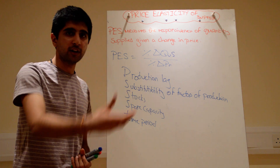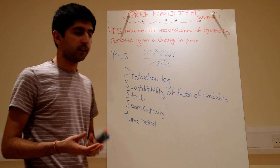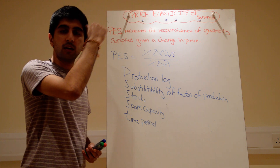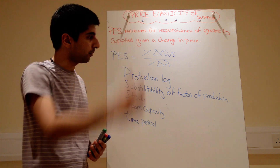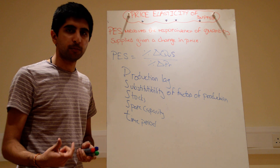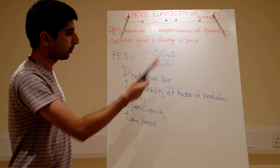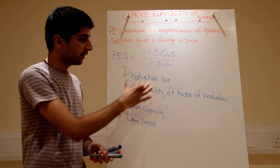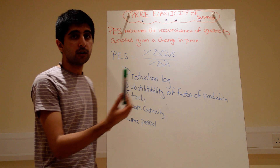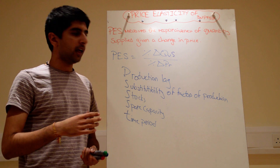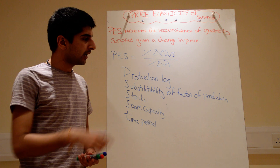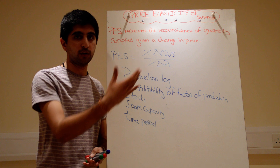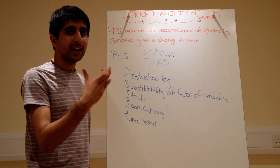Production lag: the longer the production lag, the more difficult it is for supply to respond to a change in price — which can also be caused by a change in demand. When demand shifts right, price goes up; when demand goes down, price falls. If there's a large production lag involved, supply can't respond quickly — supply will be inelastic. Cereal is a good example: if a new cereal is in massive demand and the price goes up massively, suppliers can't respond immediately because it takes a long time to grow and harvest wheat. So the larger the production lag, the more inelastic supply will be.